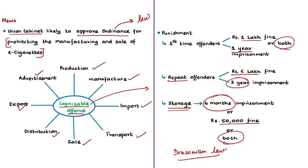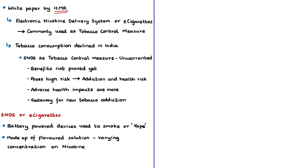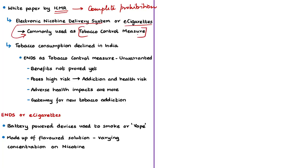In June 2019, the Indian Council of Medical Research (ICMR) recommended a complete prohibition on ENDS — Electronic Nicotine Delivery Systems — or e-cigarettes in India, based on a white paper it released. Initially, ENDS or e-cigarettes were used as a tobacco control measure. The paper stated that tobacco consumption, especially cigarette smoking, has shown a decline in India in recent years due to several tobacco control measures already initiated by the government. At this point, marketing a product like ENDS is unwarranted as a tobacco control measure, as e-cigarettes' benefits have not been proved and they pose a high potential harm due to addiction and health risks.